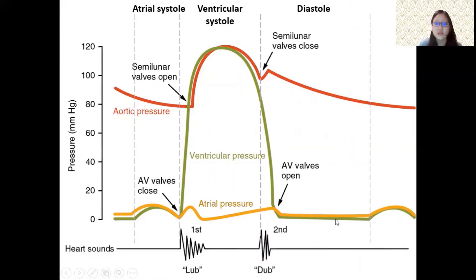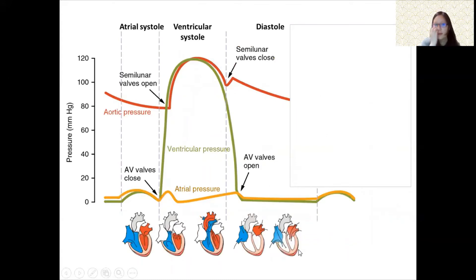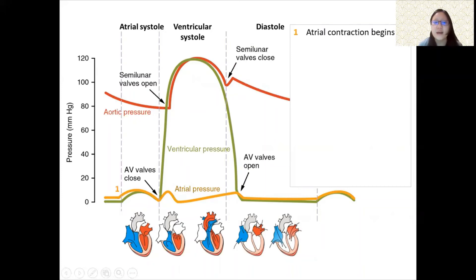Taking a closer look at the heart sounds on the graph: the first sound, 'lub,' occurs when the AV valves close, and the second sound, 'dub,' occurs when the semilunar valves close. Let's now go through this again with numbers and pictures to get a better idea of what is going on.